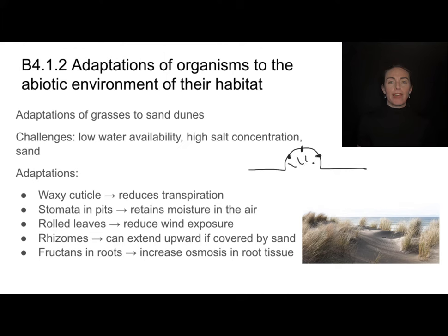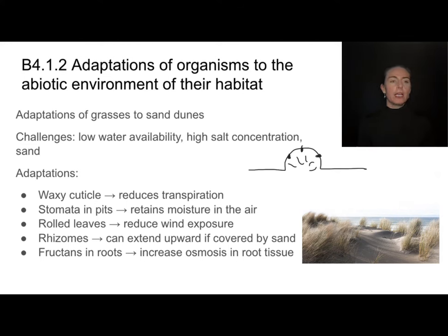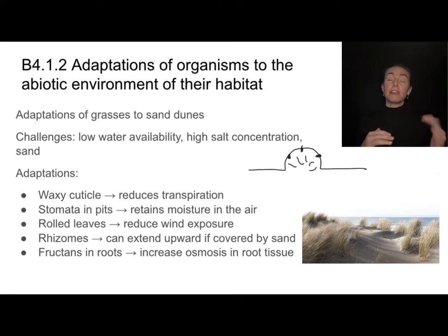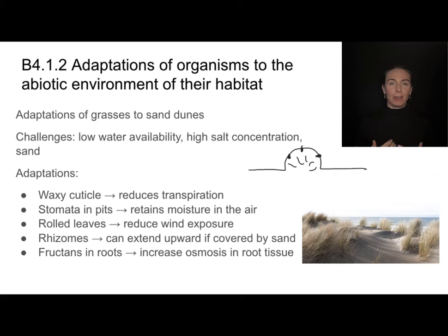Those pits are often lined with hairs to help capture moisture and reduce the difference in humidity between the inside and outside of the leaf. These grasses will also roll up their leaves to reduce wind exposure. They may have rhizomes that can extend upwards if they're covered by sand — these are root-like structures. They also have fruit tans in their roots, which influence how much osmosis can occur in the root tissue, ensuring maximum use of available water.